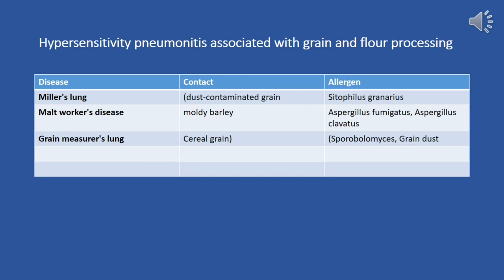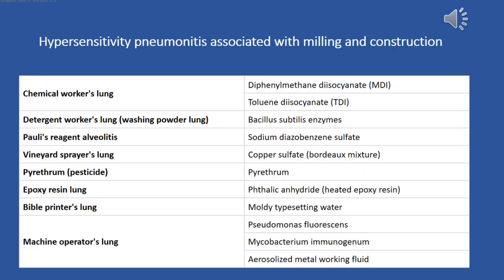Hypersensitivity pneumonitis associated with milling and construction includes conditions such as chemical worker's lung, detergent worker's lung, polyurethane regent lung, vineyard sprayer's lung, epoxy resin lung, bible printer's lung, and machine operator's lung.